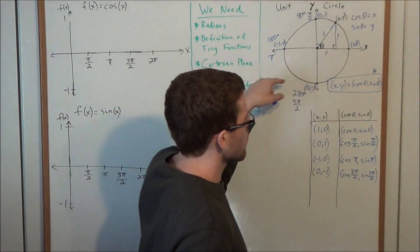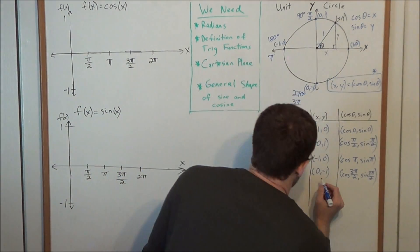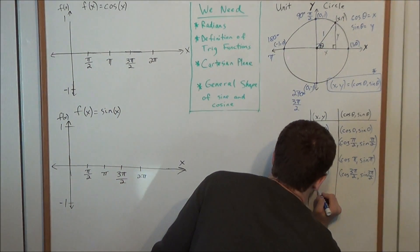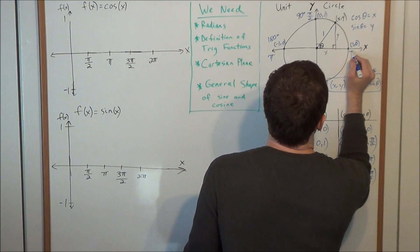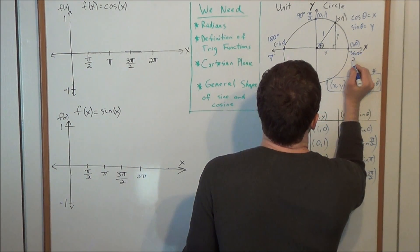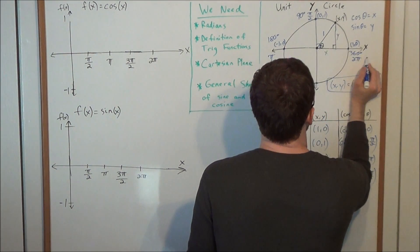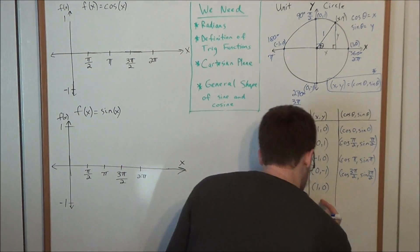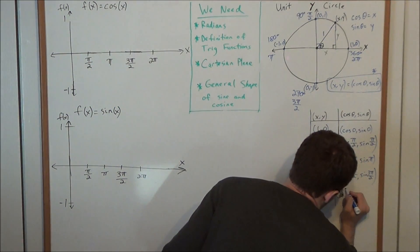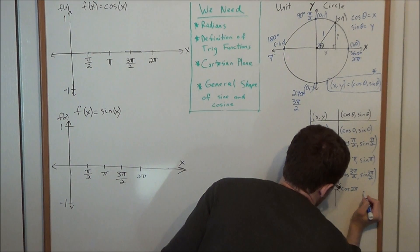Last, we'll go full circle back to the point 1, 0. When we return to 1, 0, we're spinning a full 360 degrees, or 2 pi radians, which tells us that 1, 0 corresponds to cosine 2 pi, sine 2 pi.